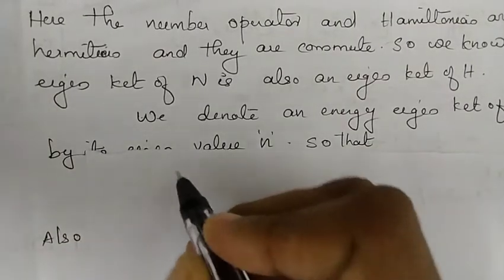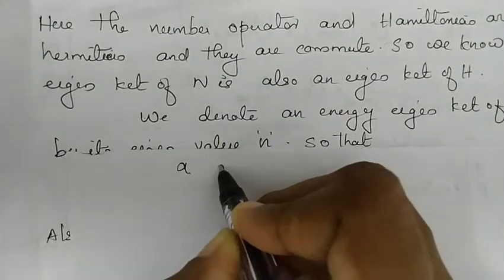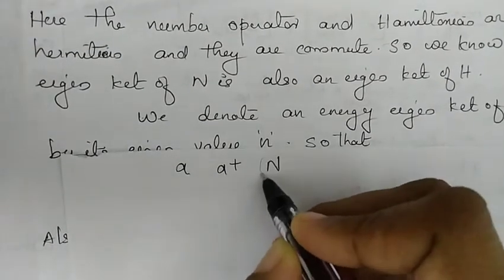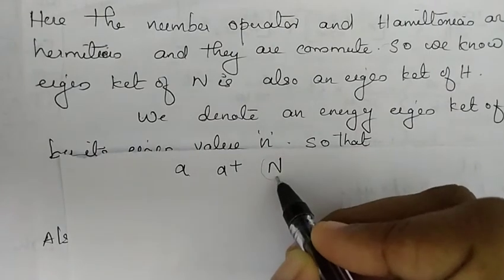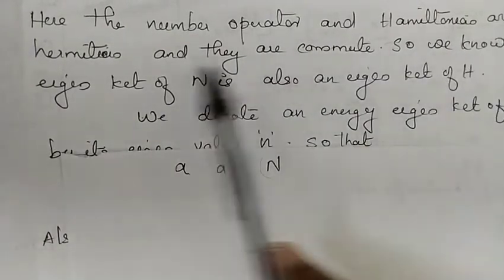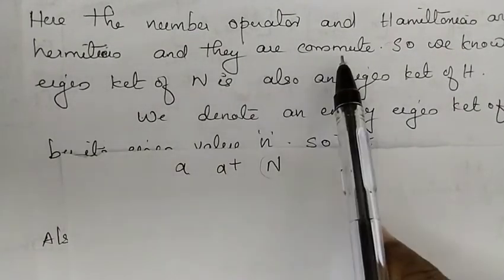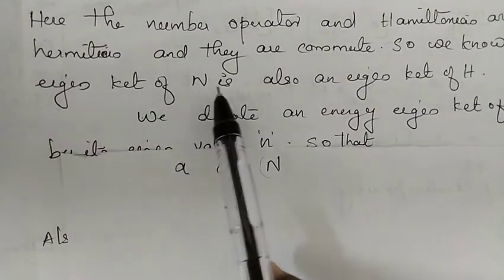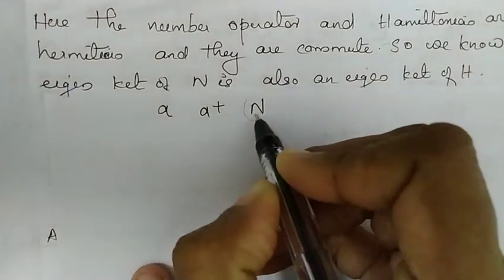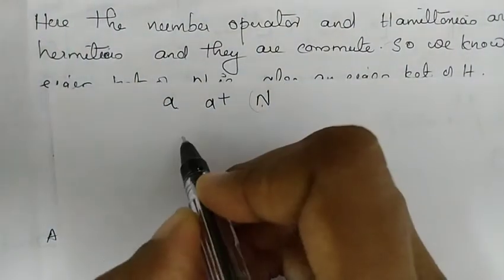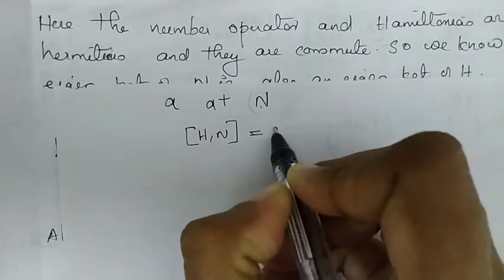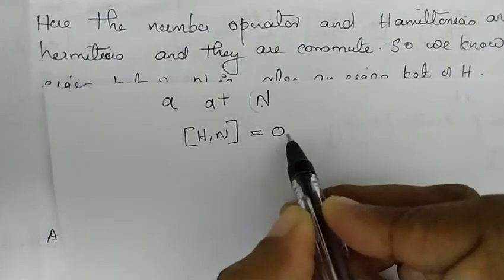We now have three operators: the annihilation operator A, the creation operator A-dagger, and the number operator N. The number operator and the Hamiltonian are both Hermitian and they commute with each other, so the commutation between H and N is equal to zero.